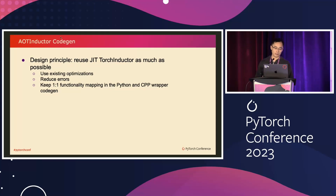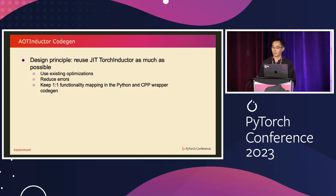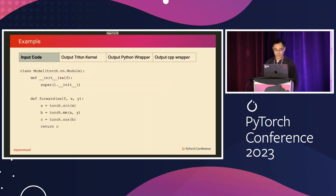When we actually change the inductor's code gen part, we have this very important design principle in mind: we try to reuse the JIT inductor as much as possible. Not only does that give us all the optimizations for free, but it also reduces the chances of making mistakes, making verification and bring-up much easier. Next, I'm going to explain what the JIT inductor generates as its wrapper code and kernel code, and what AOT Inductor generates differently.